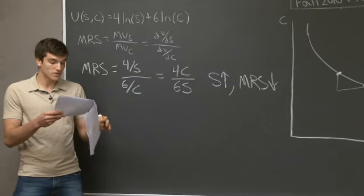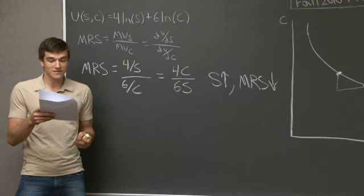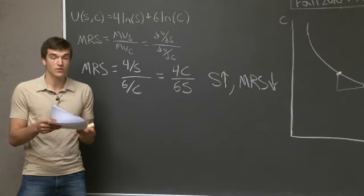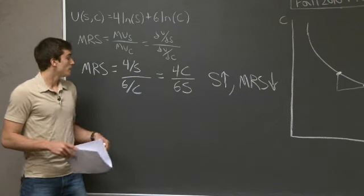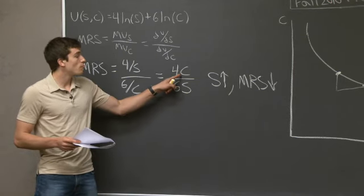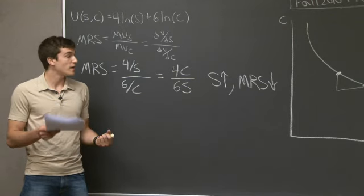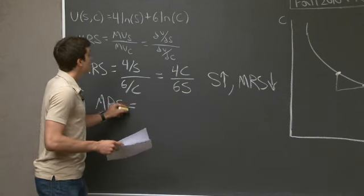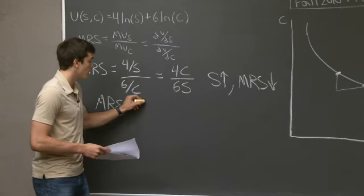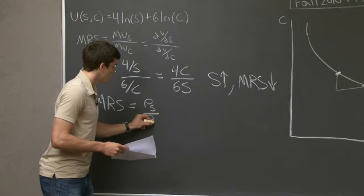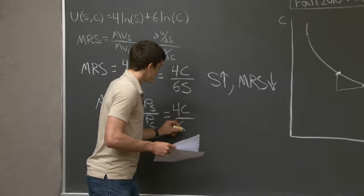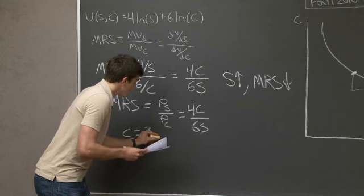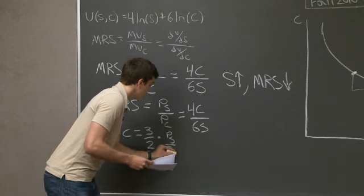Part B asks us to find Zhao's demand functions for software and clothes — QS and QC — in terms of the price of software PS, the price of clothes PC, and Zhao's income. To do this, we set the MRS equal to the price of software over the price of clothes. From there, we solve for C and find that C equals three-halves times PS over PC times S.